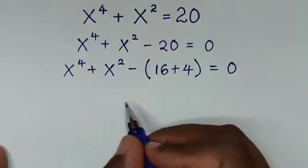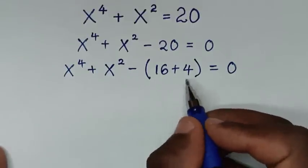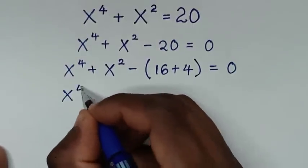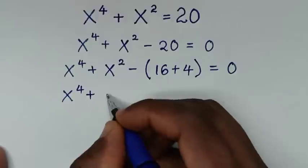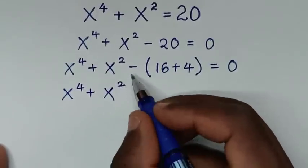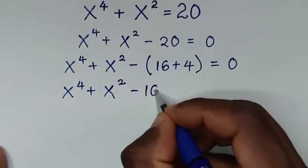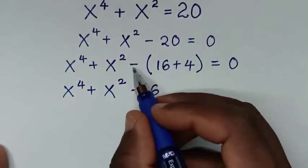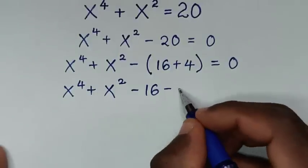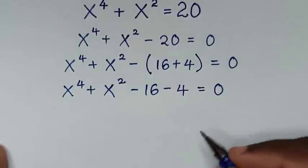In the next step we take the negative inside the bracket. So it will be x to the power 4 plus x to the power 2, and taking the negative inside gives minus 16, then minus 4, equal to 0.